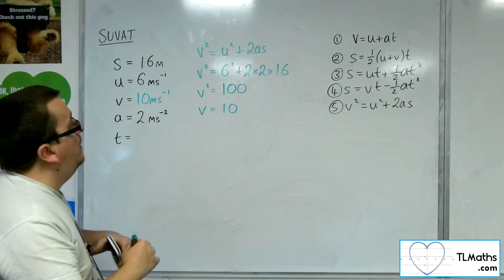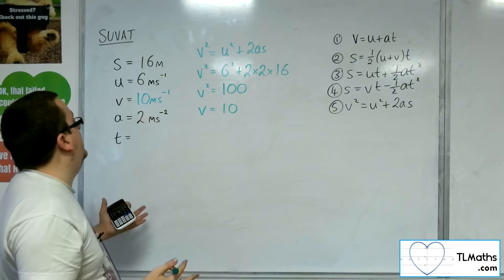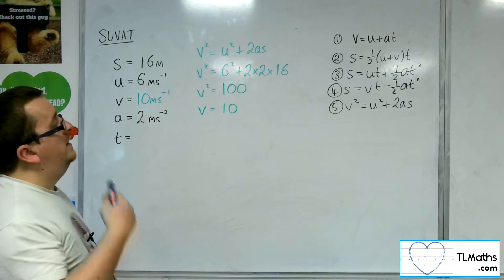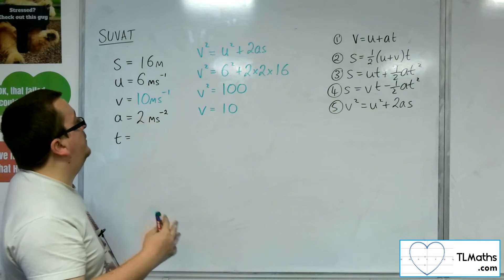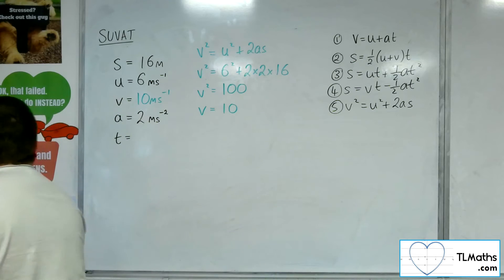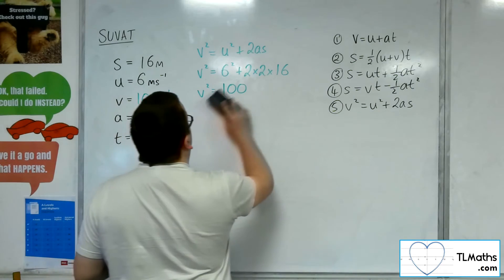Now, at this point, I would have enough information to find t quite easily. But instead, what I'm going to suggest is that we go through it as if I haven't found v.